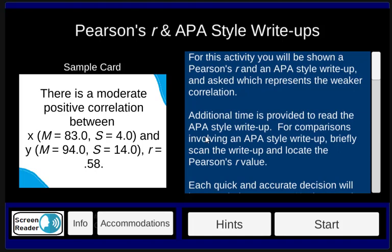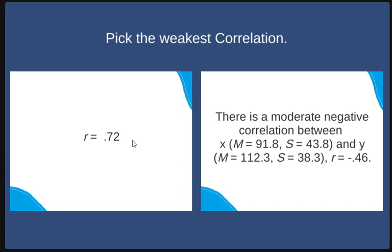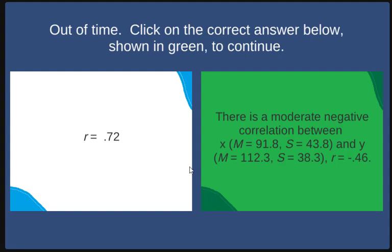We're looking at the Pearson r and APA style write-ups game. For this game you'll be shown two cards and asked to pick the weaker correlation. The weaker correlation is going to be the Pearson r that's closest to zero.